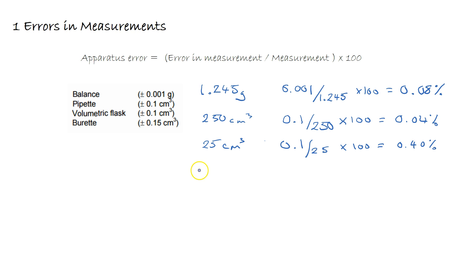Then the titration experiment was done and the average titration was 23.30 cm³, which would give an error in the burette reading of 0.15 over 23.30 times by 100.